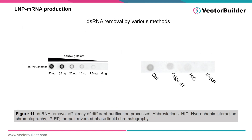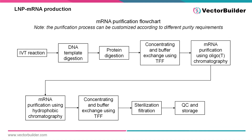After conducting the IVT reaction, impurities such as residual DNA and protein are purified with oligo-dT chromatography. However, double-stranded RNA can remain after the first round of purification, which is problematic due to the large immune response it elicits. VectorBuilder offers a variety of methods to remove the remaining contaminants, including hydrophobic interaction chromatography and ion-pair reverse phase liquid chromatography. Diagrammed on this slide is the typical workflow for the purification of mRNA; however, these specifications can be customized to produce the best results for your project.